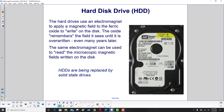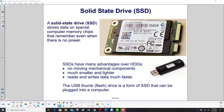Hard disk drives are being replaced by solid-state drives. A solid-state drive stores data on special computer memory chips that remember even when there is no power. They have many advantages: no moving mechanical components, they are much smaller and lighter, and they read and write data much faster. The USB thumb flash drive that you carry around in your pocket is a form of solid-state drive that can be plugged into a computer.